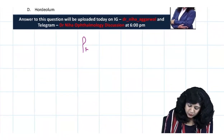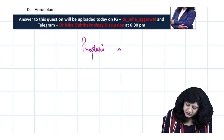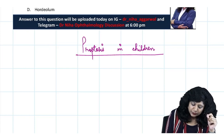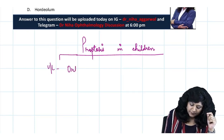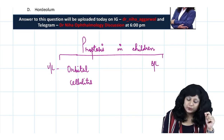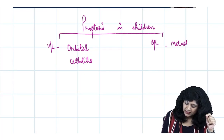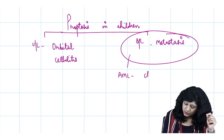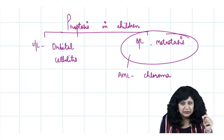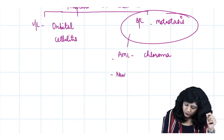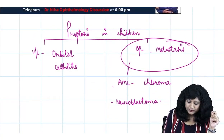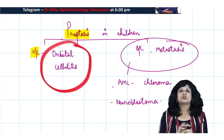If I talk about proptosis in children, the most common cause of unilateral proptosis is orbital cellulitis, while bilateral proptosis is most commonly due to metastasis. This metastasis is most commonly from AML, that is chloroma - acute myeloid leukemia - and it can also be neuroblastoma. Because here we have unilateral proptosis, you get the clue that this must be a case of orbital cellulitis.